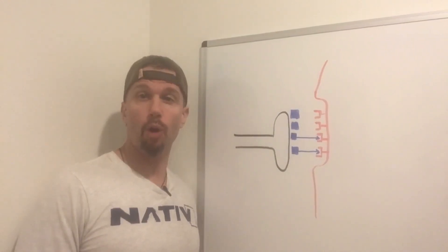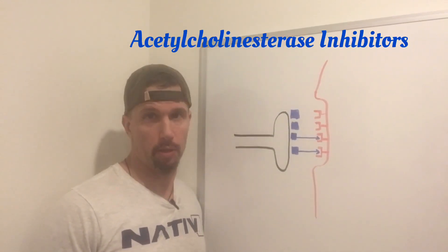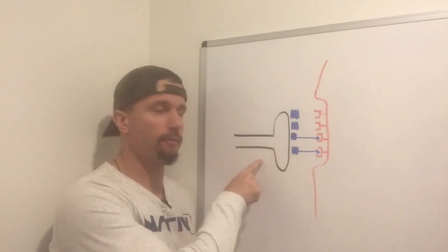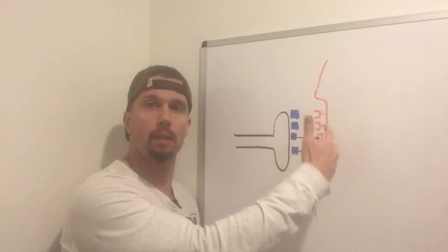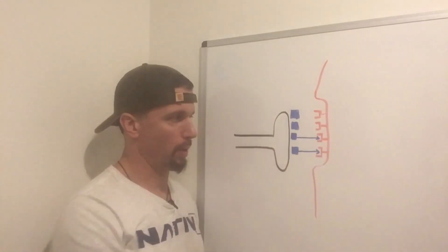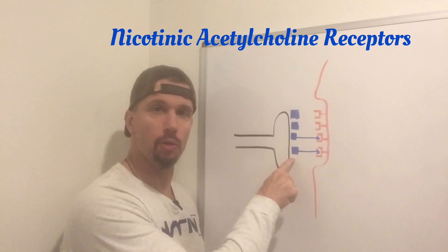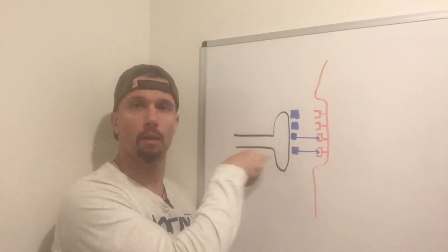We're going to talk about acetylcholine esterase inhibitors. Right here we're at the neuromuscular junction where the alpha motor neuron meets the skeletal muscle. So we have nicotinic acetylcholine receptors here, and we have acetylcholine released from the alpha motor neuron.